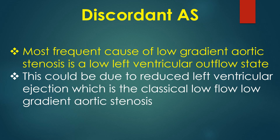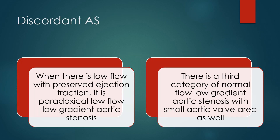The most frequent cause of low gradient aortic stenosis is a low left ventricular outflow state — either due to reduced LVEF (classical low flow low gradient AS) or with preserved ejection fraction (paradoxical low flow low gradient AS). There is also a third category of normal flow low gradient aortic stenosis with small aortic valve area.